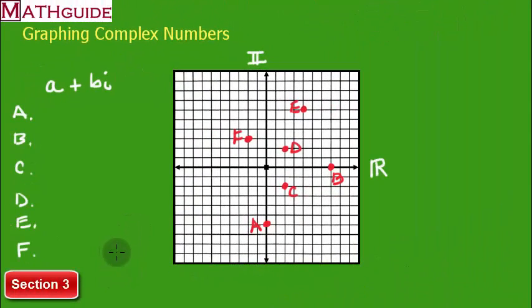Alright, in this section we're going to take a look at the points that have been already graphed and write down what those complex numbers really are. Let's take a look at A. You'll notice that it is on the imaginary axis and off of the real. So it has all imaginary part, zero for the real. One, two, three, four, five, six, negative six for the imaginary part. So we'd say it's negative 6I.